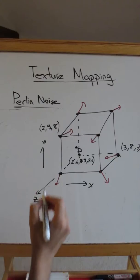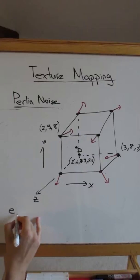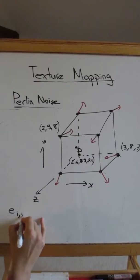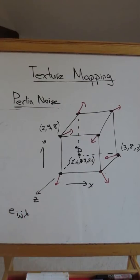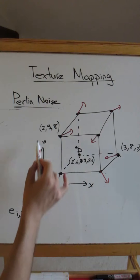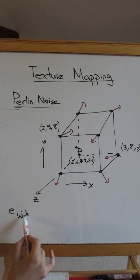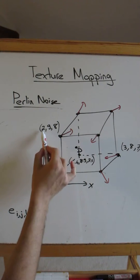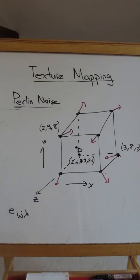So the idea is to compute the edge vector, the gradient vector e_ijk. So this is the gradient vector, edge vector at integer values of i, j, k. So i is for the x, j for the y, and k for the z. So you can, in this for example, i, j, k could be 2, 9, 8.